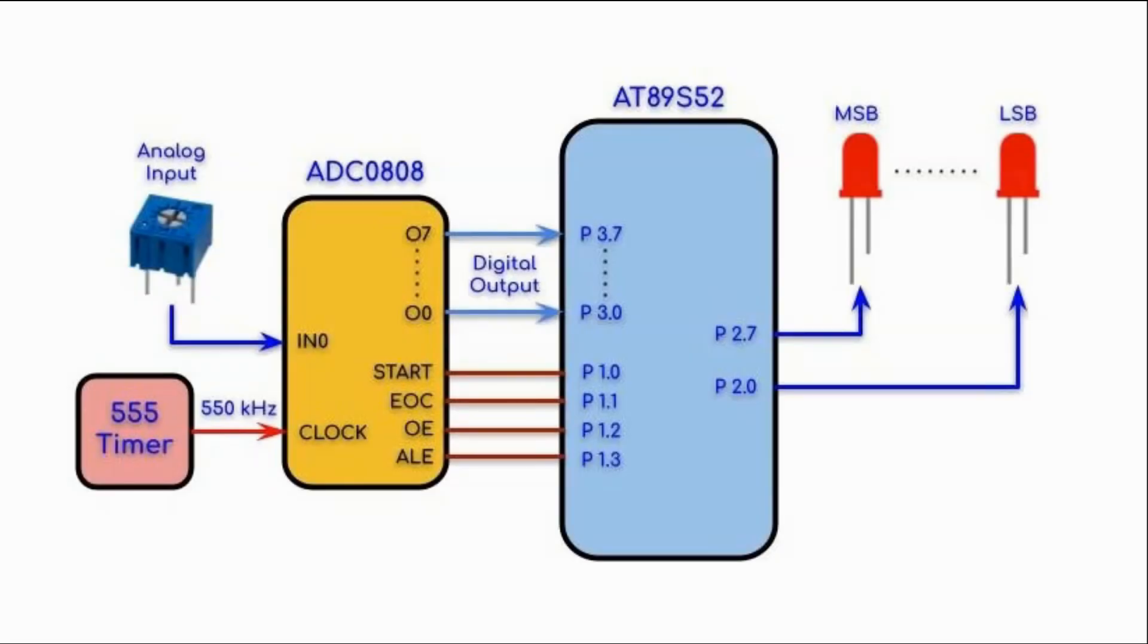A block diagram of the implemented system is shown here. The clock signal is generated using this 555 timer running in astable mode that gives us a rectangular waveform at 550 kHz. We have one analog input fed through this pot into analog input 0, which means that the address lines A, B and C have been grounded so that this line is selected. The digital output is interfaced with the AT89S52 microcontroller through port 3.